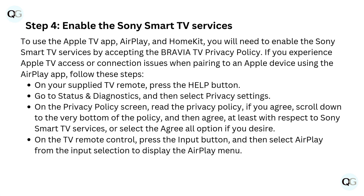Step 4: Enable the Sony Smart TV services. To use the Apple TV app, AirPlay, and HomeKit, you will need to enable the Sony Smart TV services by accepting the BRAVIA TV privacy policy. If you experience Apple TV access or connection issues when pairing to an Apple device using the AirPlay app, follow these steps. On your supplied TV remote, press the Help button. Go to Status and Diagnostics, and then select Privacy Settings. On the Privacy Policy screen, read the Privacy Policy; if you agree, scroll down to the very bottom and select Agree — at least with respect to Sony Smart TV services — or select Agree All. Then press the Input button and select AirPlay from the Input selection to display the AirPlay menu.